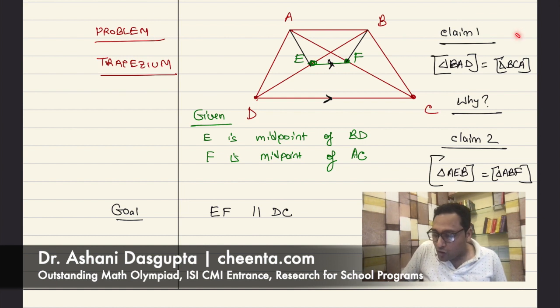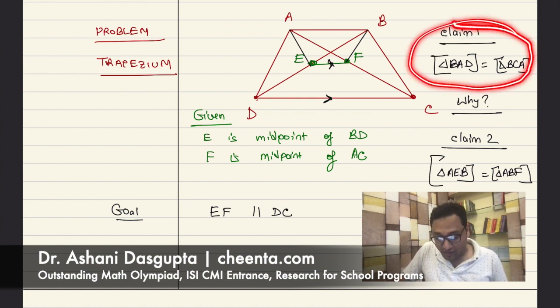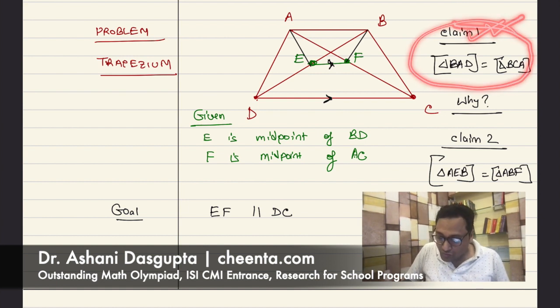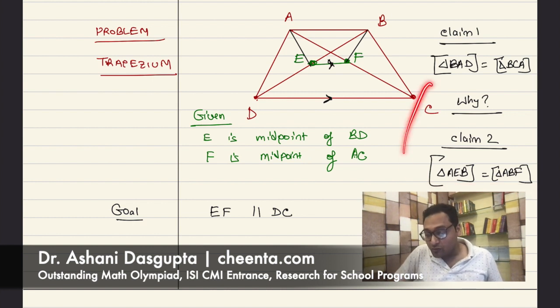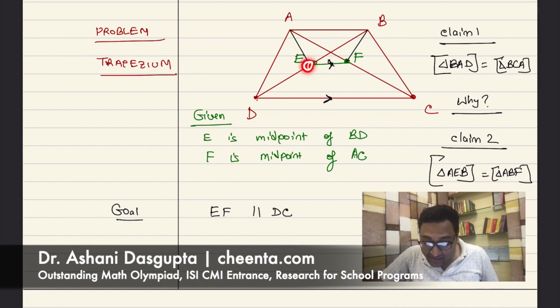So, that would follow directly from claim one. If claim one is true, then claim two is almost immediate. Can you tell me why? Can you tell me why this claim two is almost immediately true if you know claim one? Use the fact that E is the midpoint of BD and F is the midpoint of AC.